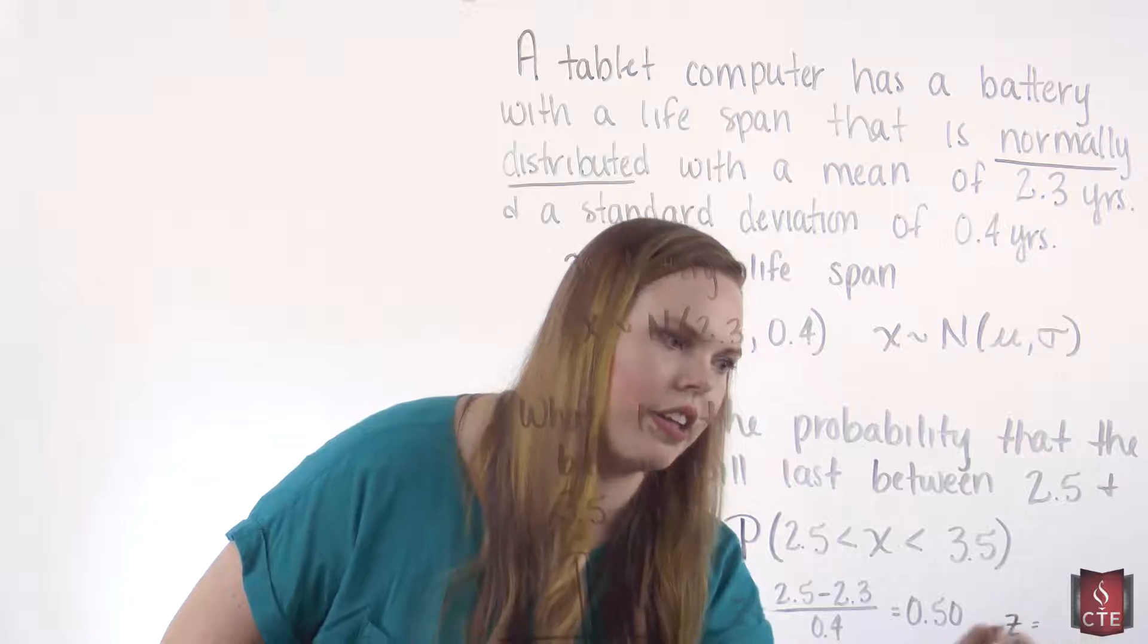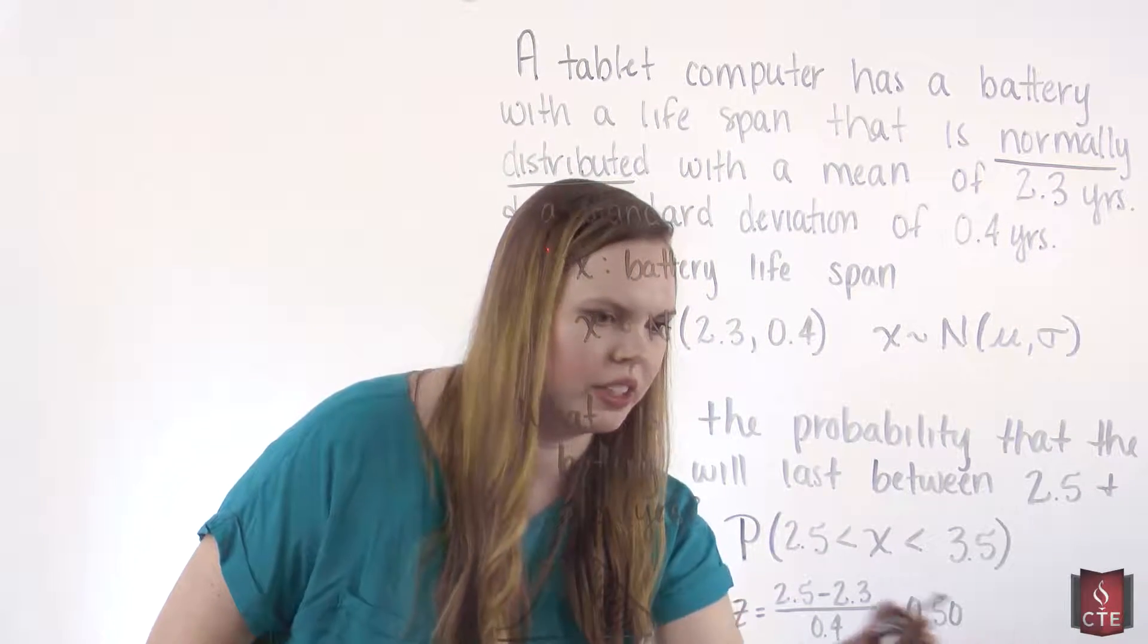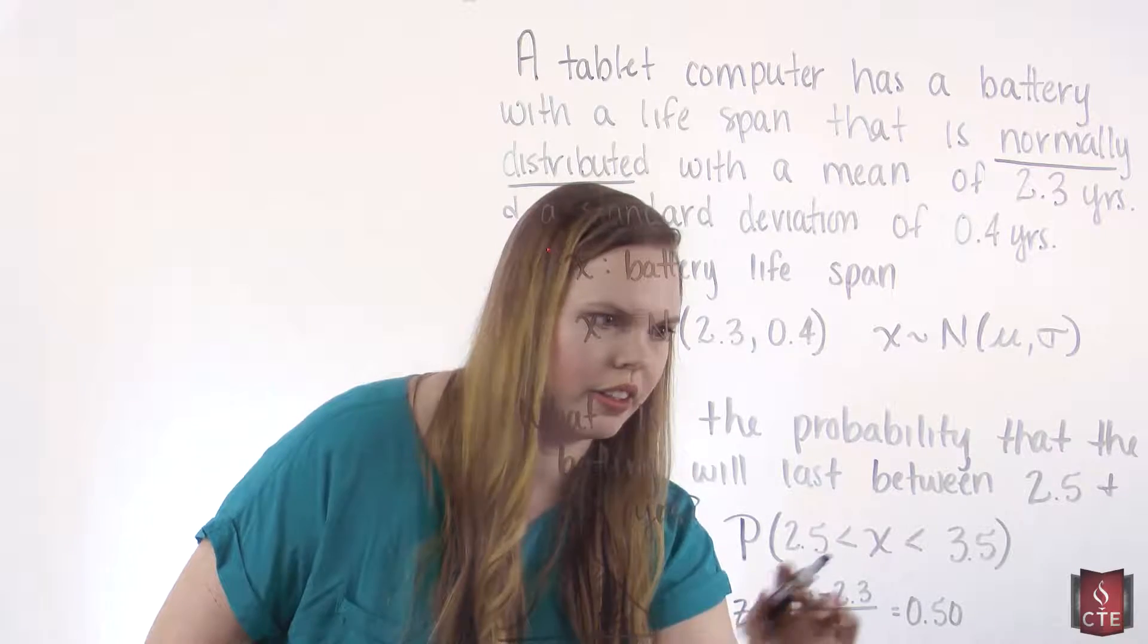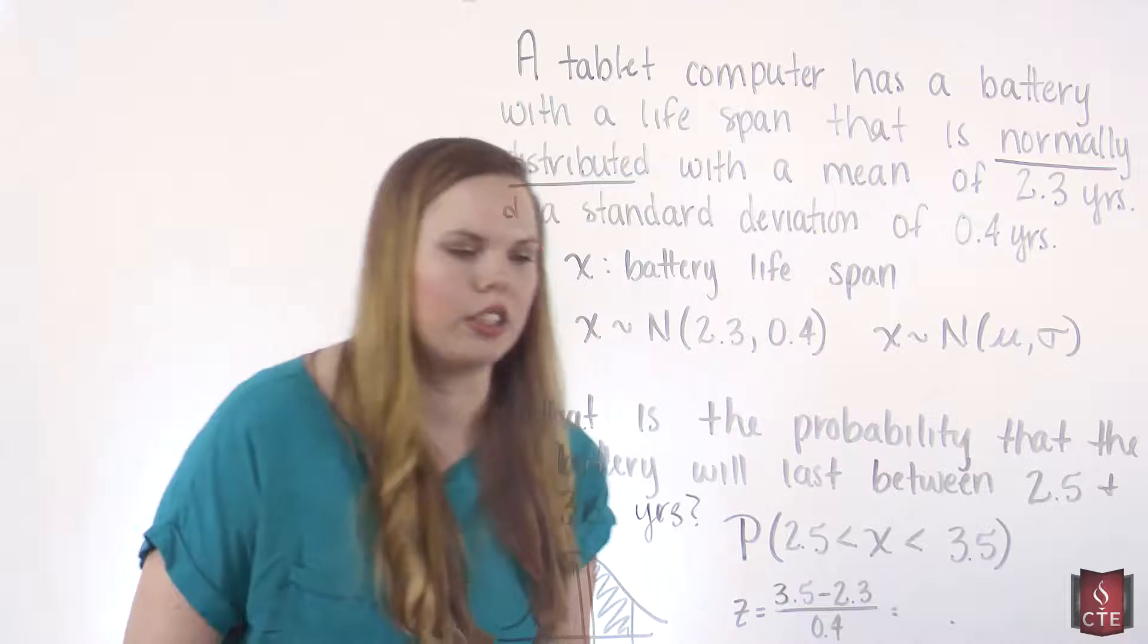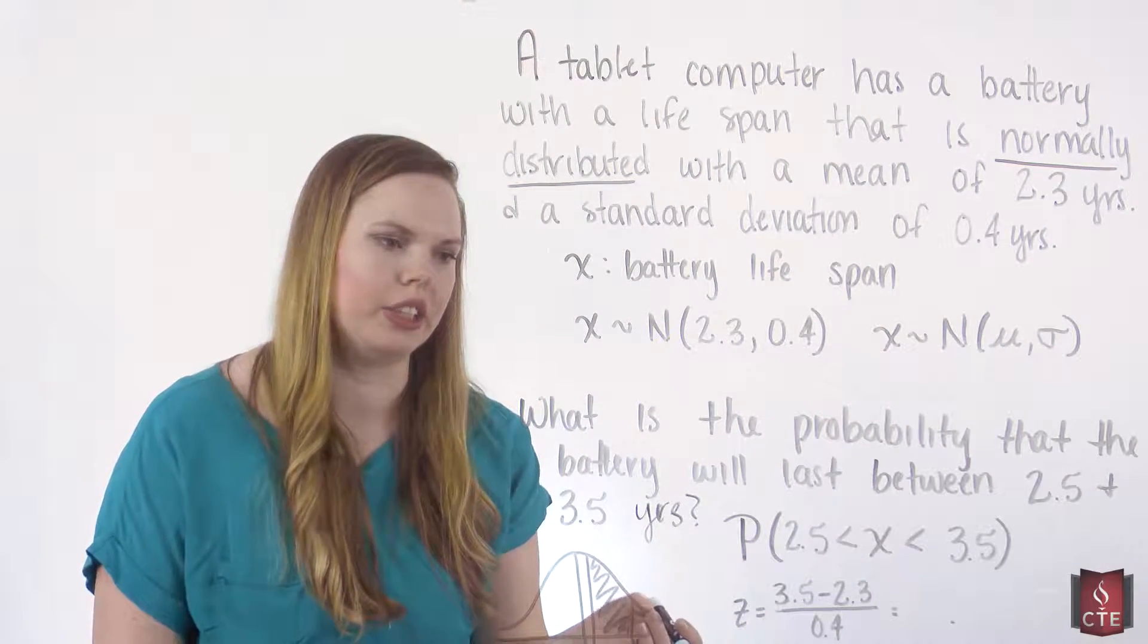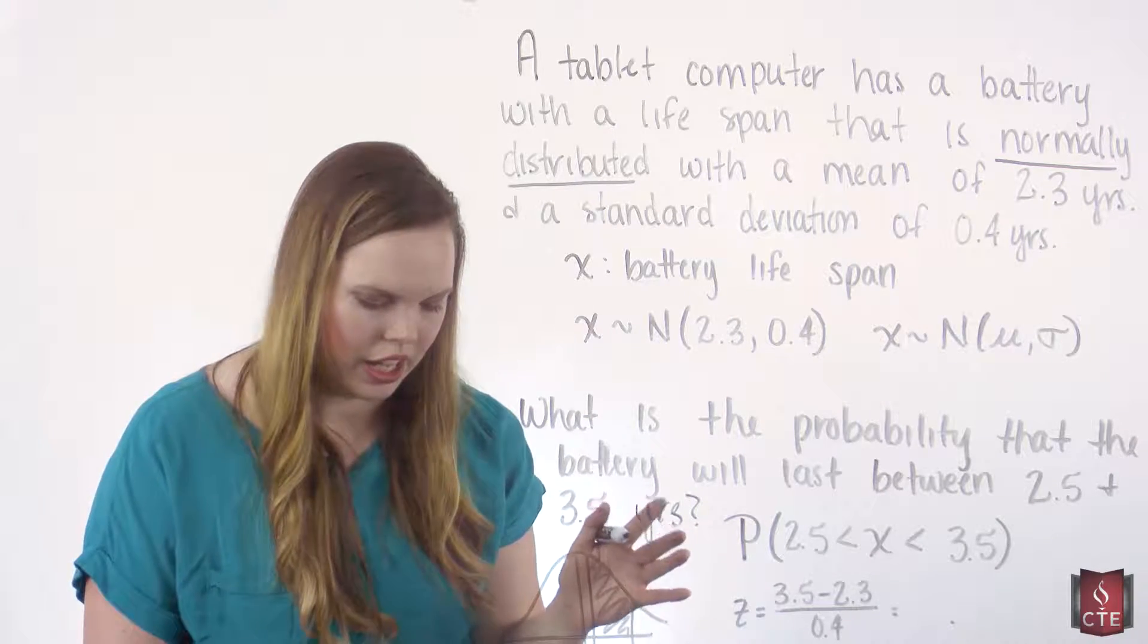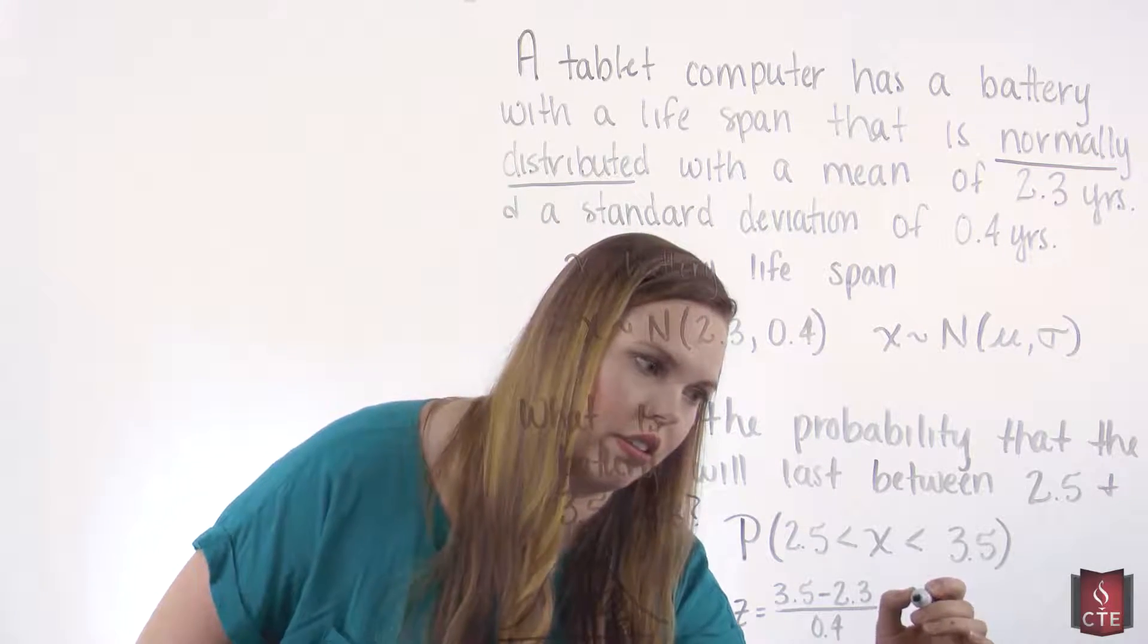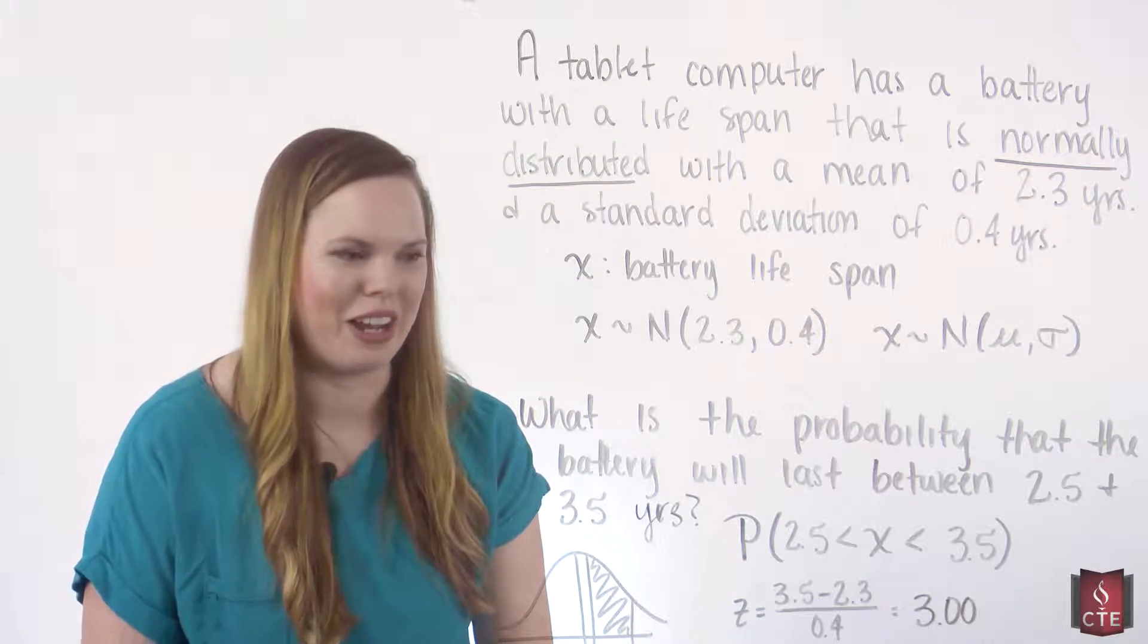And we'll find the z of 3.5. So we're taking our x of 3.5, subtracting 2.3, and dividing by 0.4. So this z is 3.00.